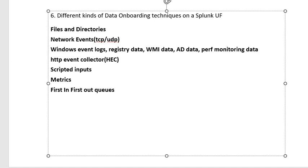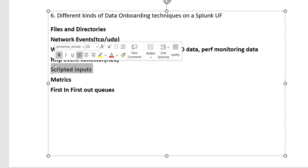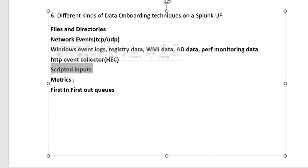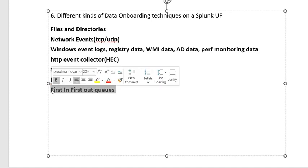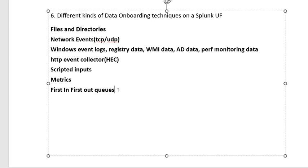HEC — HTTP Event Collector — we will see in detail in upcoming videos. Scripted inputs mean you can create a small shell, Perl, or Python script that reads logs and sends them to indexers. You can also collect metrics on a Universal Forwarder. Additionally, there are FIFO queues — first in, first out — which we will cover in upcoming videos.